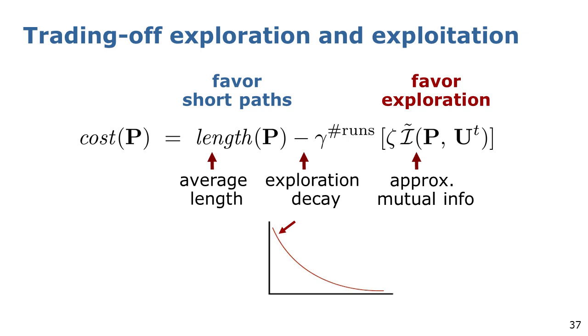Initially, when only few observations are available, we favor exploratory behaviors to collect information. As the robot acquires information on the environment, the exploration behavior becomes less and less prominent. And finally, when the learning process of the model converges, we select paths similarly to CTP-UCT.